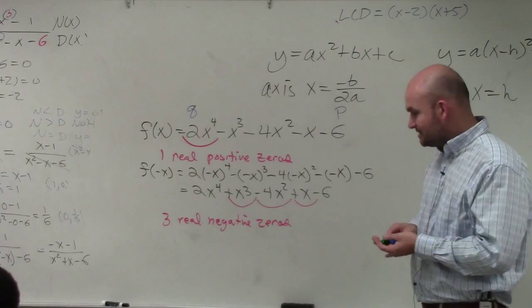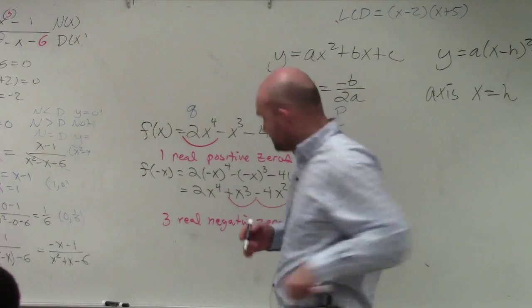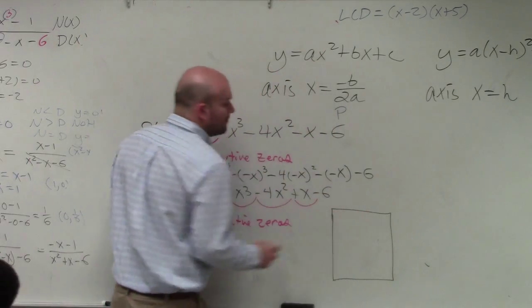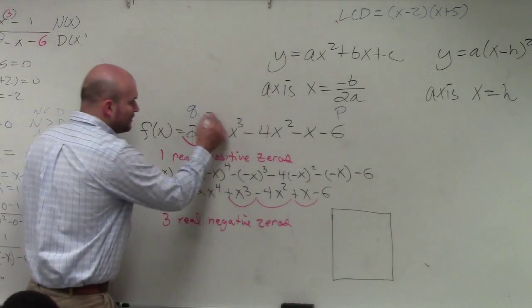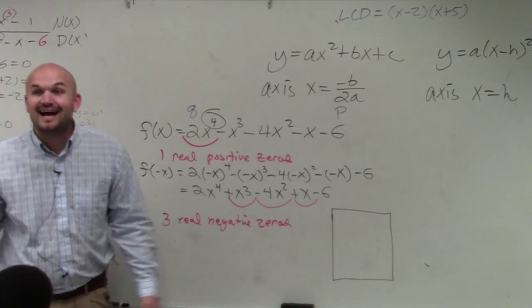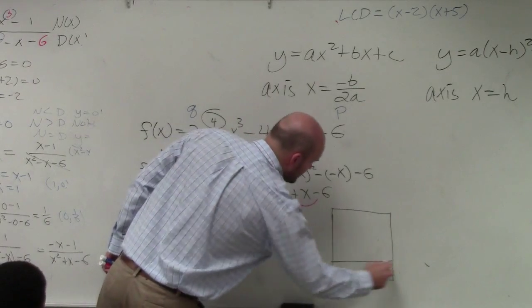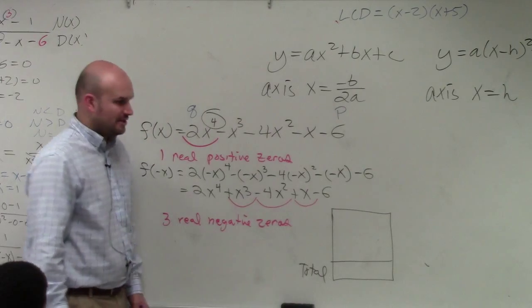So the way that I like to do this is let's look at all the possibilities. Let's look at the possibilities of our zeros. Now, by the fundamental theorem of algebra, the degree tells us what? There are four zeros. How many zeros we have, right? So fundamental theorem of algebra, we know there is a total of four zeros.